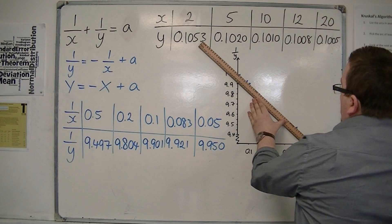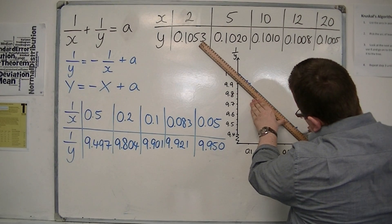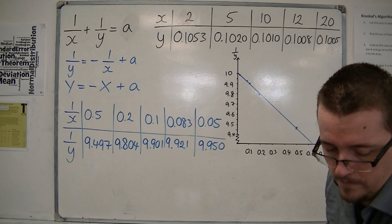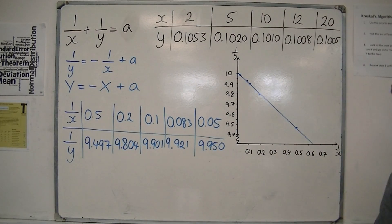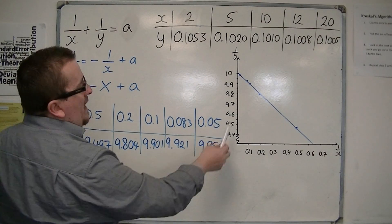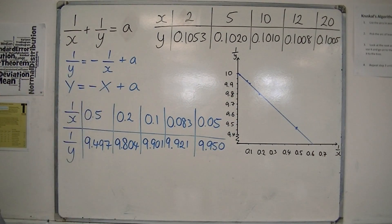Now, it's not necessarily going to be perfect, but that's the whole point of this. So what we should be looking at is saying, well, our value of a, then, must be just over 10 or close to the 10 mark.